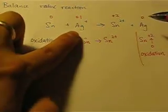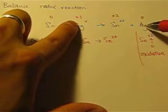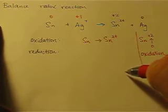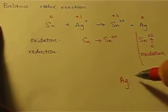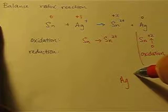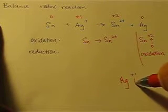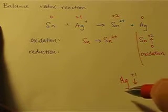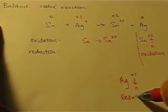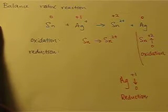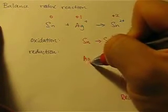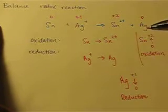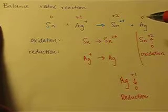And then we look at silver. Silver here is plus one. And going to the product side, it is zero. So silver is actually going down. So I can write silver is going from plus one down to zero. And when you see a decrease of oxidation number, it means reduction. So we have Ag plus silver ion going to silver metal.